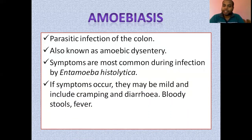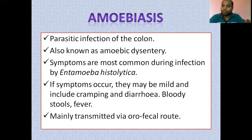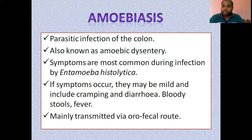Symptoms generally include diarrhea, bloody stools, and fever. Diarrhea is most common in amoebiasis and comes with abdominal cramps. It is mainly transmitted via the orofecal route, meaning the infection spreads from the feces of another organism or animal through contaminated food or drink. If we consume something contaminated with Entamoeba histolytica, it can cause amoebiasis.